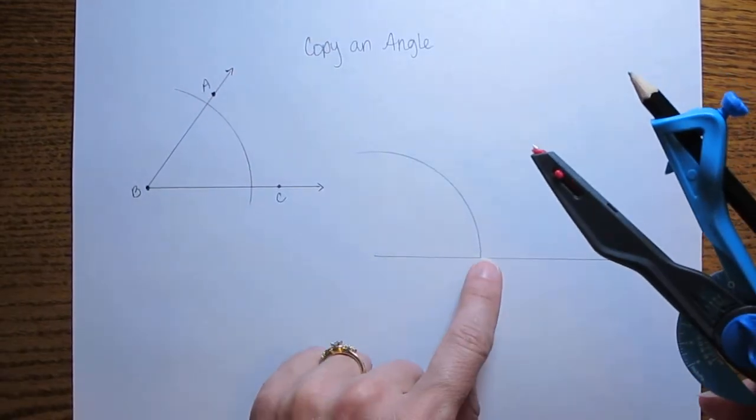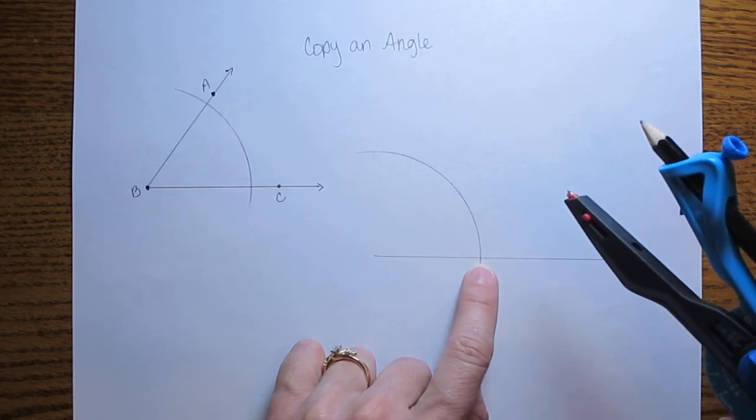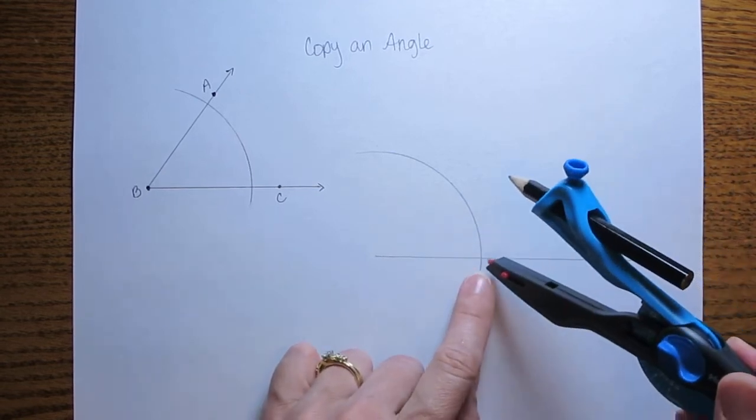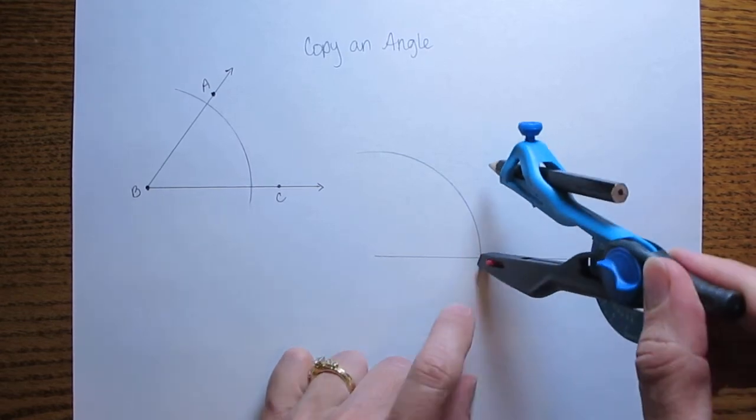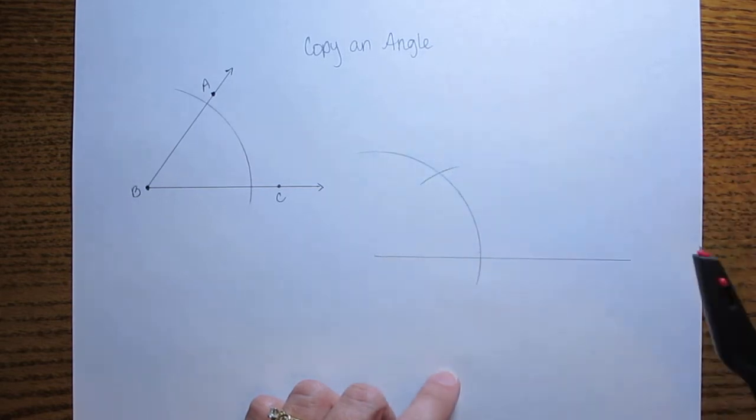Take that setting on your compass and come to where you're copying the angle. Where your arc intersected that segment you're going to put the point of your compass down and you're going to make another arc that intersects the first arc.